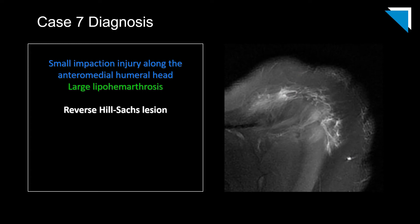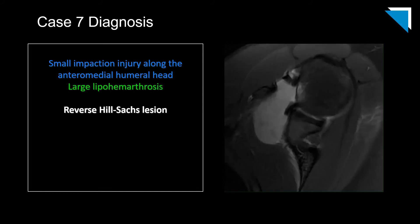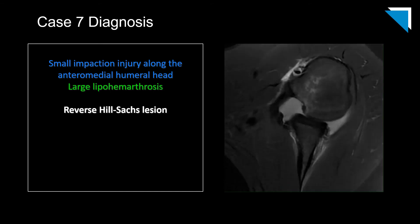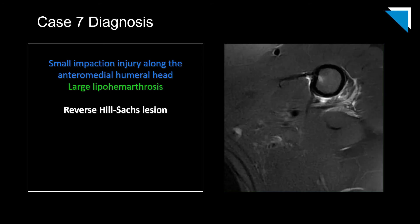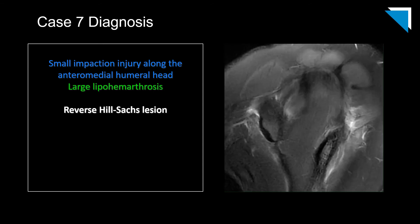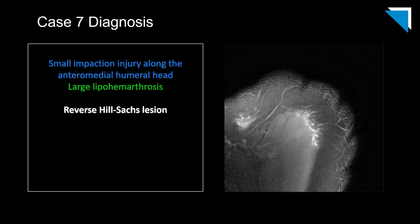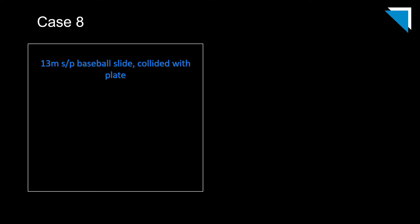I wanted to scroll through one sequence from the follow-up MRI to show how well fat-suppressed fluid-sensitive sequences bring osseous injuries like this into sharp focus — the bone marrow edema really stands out and draws attention to the impaction injury. MRI is much more sensitive for evaluating the labrum, and we see lots of labral injuries with both anterior and posterior dislocations.